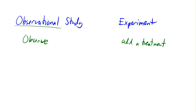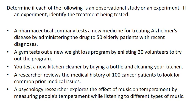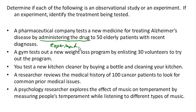Let's look at some examples. In each of these situations, let's see if it is an experiment or an observational study, and if it's an experiment, let's identify the treatment. Suppose a company tests a new medicine for treating Alzheimer's by administering the drug to 50 elderly patients. We are actually administering the drug, so we are doing a treatment — this is, indeed, an experiment, and the treatment is the drug that we're testing.